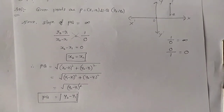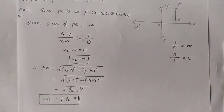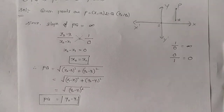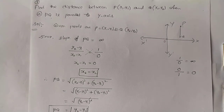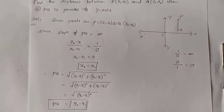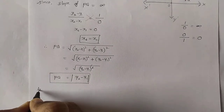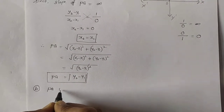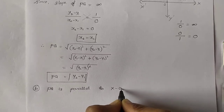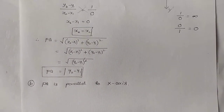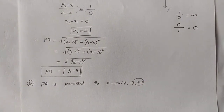Modulus represents that the value should always be positive. Distance is measured in positive quantities only. If you want to take a screenshot, you can. Now let us solve sub-question B: PQ is parallel to x-axis.